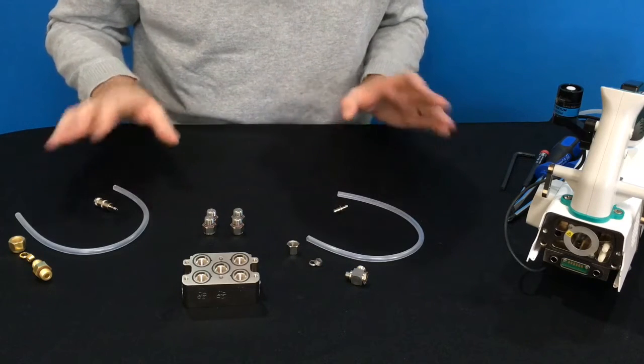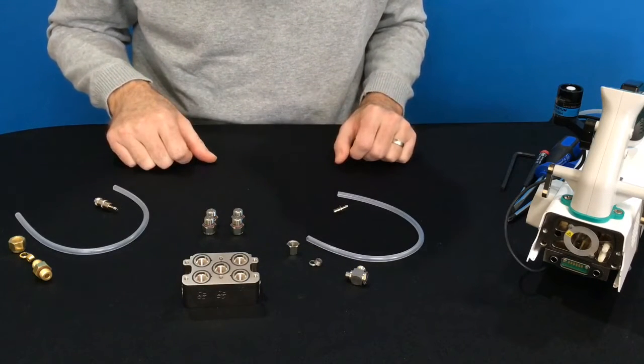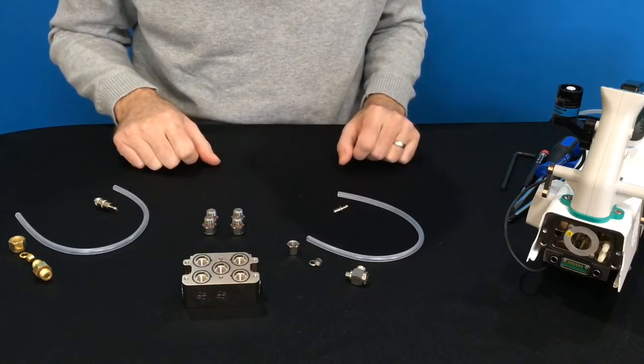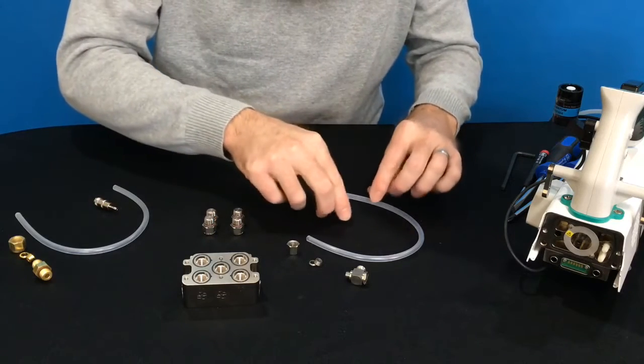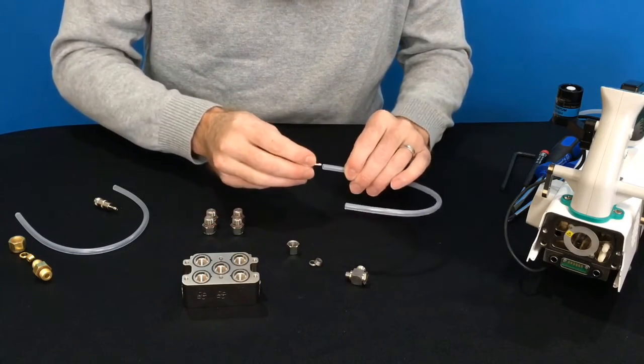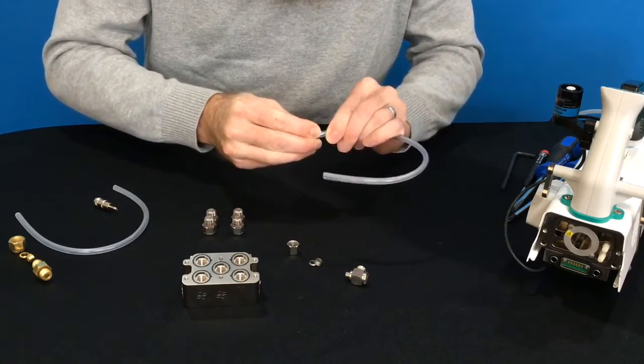This comes disassembled, so we have to put it together before we put it on the chamber, and what goes where matters quite a bit. So we can assemble the return to the chamber. The quick connect fittings push into the tubing.